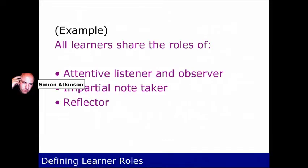We suggest that it's also useful to indicate very clearly to the student what their role is in an activity. To give them a role that they can inhabit actually allows them to engage with the activity in a much more conscious way. Simply to give an activity and say this is what you have to do and this is the outcome is not the same as saying to a learner: this is the activity, we want you to do it like this, playing this role. The example here is to specify that we want them to be an attentive listener and observer. To simply provide that additional instruction does result in a greater degree of active and well-constructed engagement.